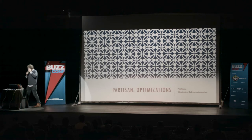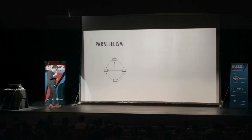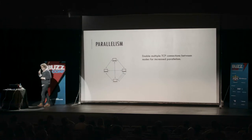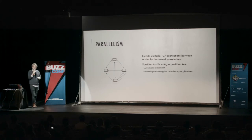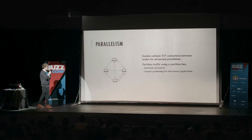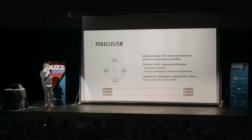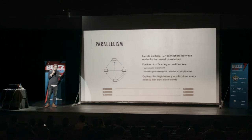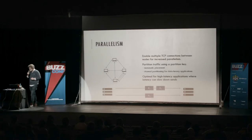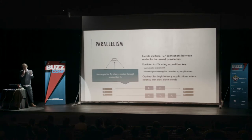Let's talk about optimizations. Once you have this network topology, you've got to optimize it for better performance. The first thing we did: a single TCP connection is not enough. We enable multiple TCP connections between all peers to enable parallelism. This allows us to partition different types of traffic based on partition keys, do automatic routing based on process IDs for best-effort FIFO guarantees between senders and receivers. This is really optimal for higher latency applications — if a particular TCP connection is in slow start, multiple connections allow parallel sends where bandwidth is available.